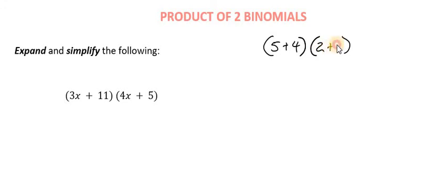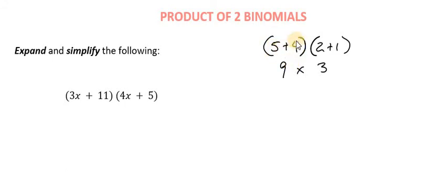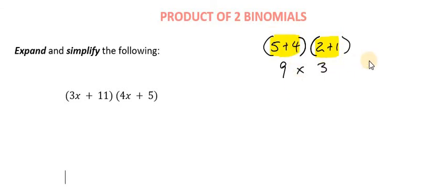Let's say we have 2 plus 1. What should we get when we multiply these two binomials together? Well, there are several methods we could use. We could say 5 plus 4 gives us 9, and 2 plus 1 gives us 3. So what we have is 9 times 3. When we have two brackets, we are multiplying the content of both brackets together. So 9 multiplied by 3 gives us 27.